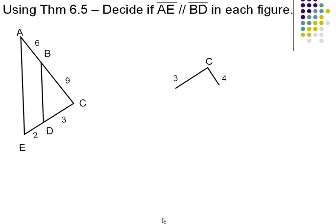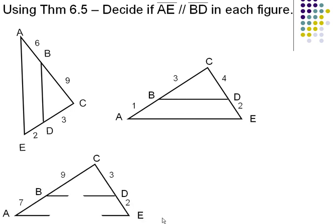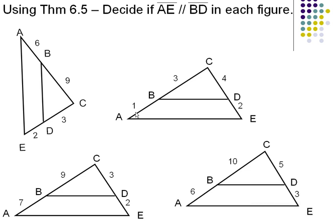Okay, we're going to use that theorem to decide if the two lines are parallel in each of these figures. AE parallel to BD in each case. We just have to see if there's proportionality between the sides. In the first one here, 6 to 9 is proportional to 2 to 3. So in this case, AE would be parallel.